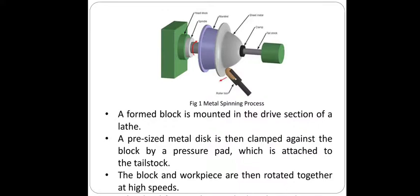The mandrel and workpiece are then rotated together at a higher speed. The roller is applied to shape the sheet metal against the mandrel. This is all about the metal spinning process.